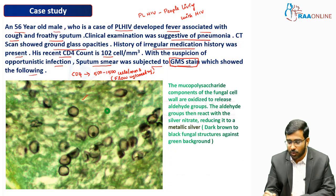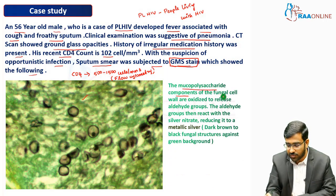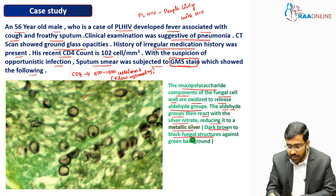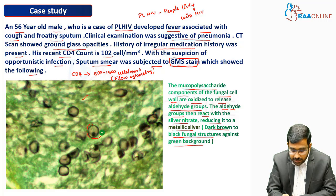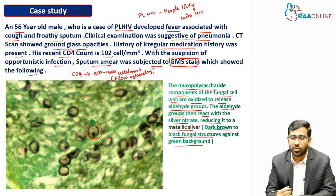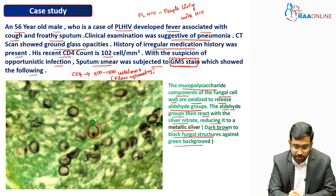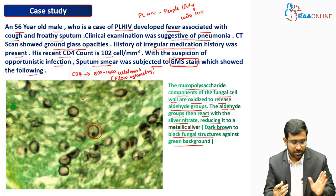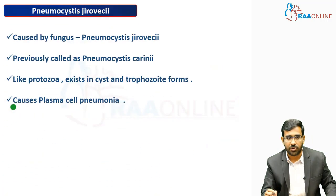The principle of GMS staining is based on the mucopolysaccharide component of the fungal cell wall. The mucopolysaccharides are oxidized to release an aldehyde group, which then reacts with silver nitrate, reducing it to metallic silver. This metallic silver deposits on the fungal structures, making them appear dark brown to black against a green background.